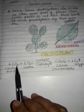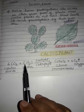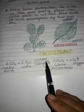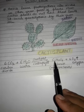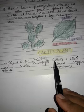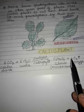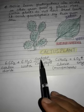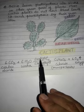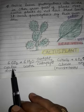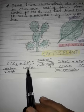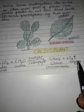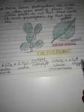6CO2 plus 6H2O gives 6C6H12O6 plus 6O2. Here: sunlight, chlorophyll, carbon dioxide, water, glucose which is a monosaccharide, and oxygen.